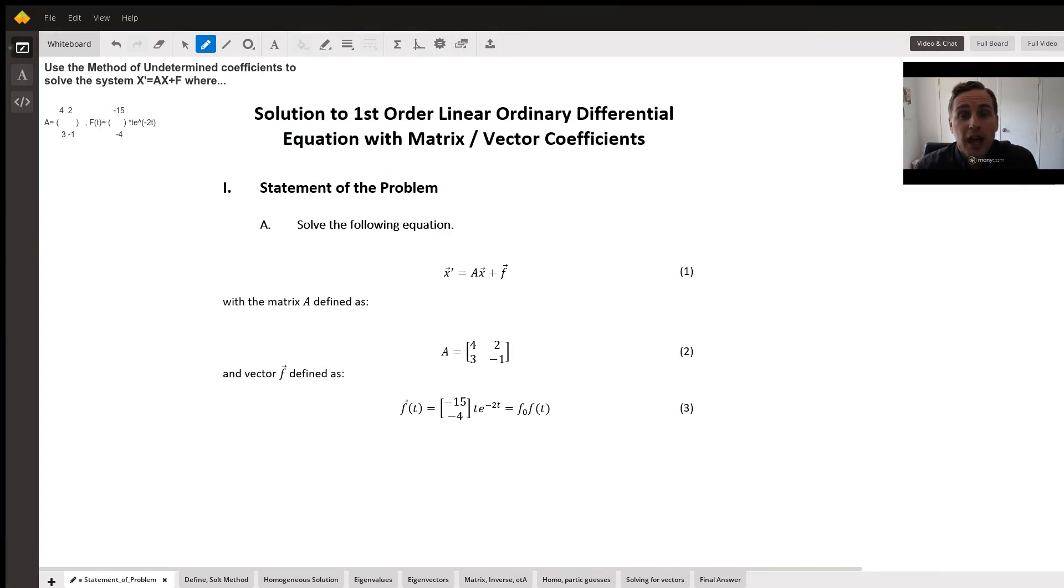Hello, I would like to show you a solution to a matrix differential equation which has many steps, so I will go through the solution on this video pretty quickly. We're going to use the method of undetermined coefficients to solve the system x prime equals Ax plus f, where A is a matrix, f is a vector multiplied by a scalar function t times e to the negative 2t power. I've written this out in a slightly better way here where x is a single vector, matrix A is a square 2x2 matrix, and f vector is that column vector times the exponential scalar function, which I'm calling f0 and ft.